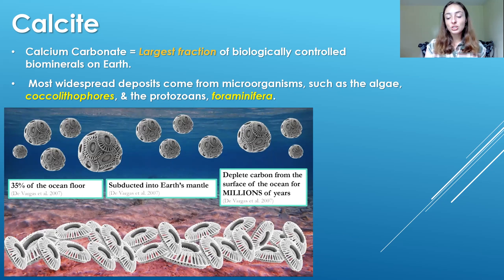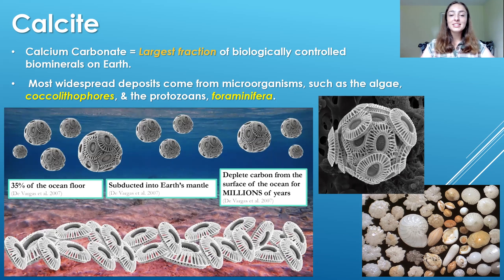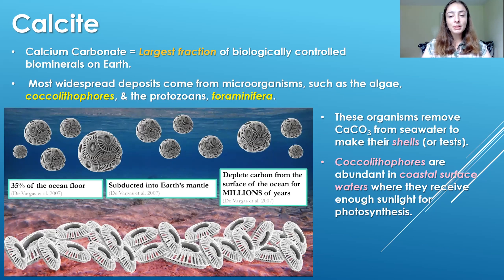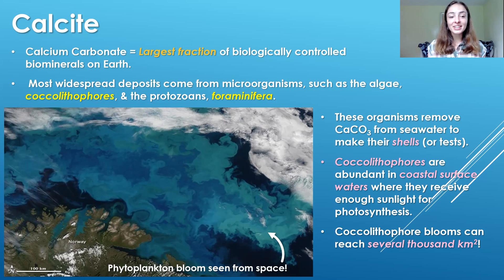These microorganisms include algae such as coccolithophores and protozoans such as foraminifera. I have a video on forams — I'll link it up here. I'm also currently making a video about coccolithophores and other microfossils. In terms of the calcium carbonate deposits these microbes cause, they basically remove calcium carbonate from the seawater to make their shells or tests. Coccolithophores are really abundant in coastal surface waters where they receive enough sunlight for photosynthesis, and their blooms can reach up to several thousand square kilometers — here's a phytoplankton bloom seen from space.